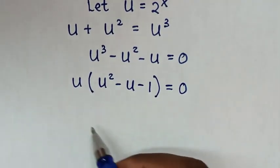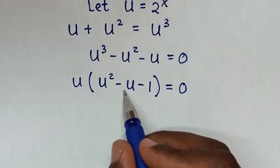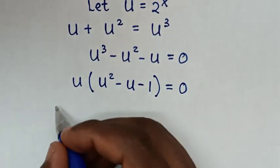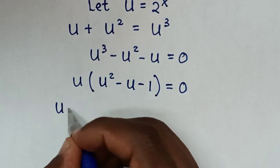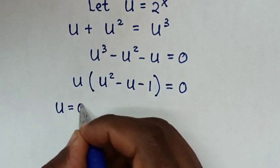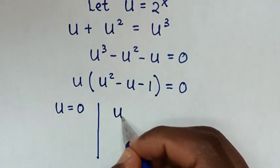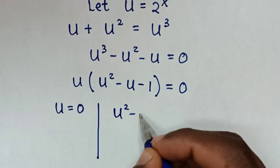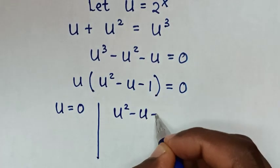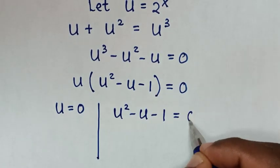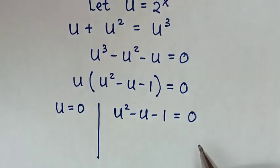From here we have two solutions. The first solution is u equals 0, and the second solution is u squared minus u minus 1 equals 0.